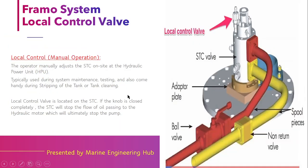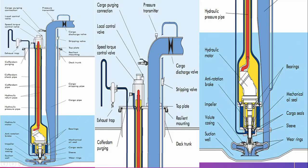Now let's look at the speed torque controller valve and the Framo local control valve. The local control valve is fitted on top of the HTC and helps to control the hydraulic motor locally from the HTC. We need the local control valve when the remote operation of the HTC has failed due to an electronics fault — rather than leaving the pump idle, we can continue operating it locally using this valve.